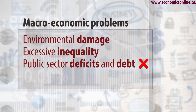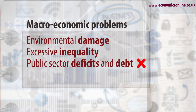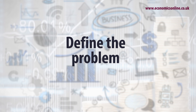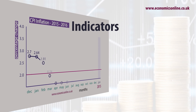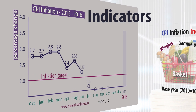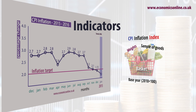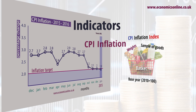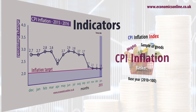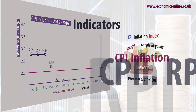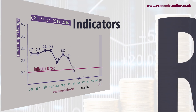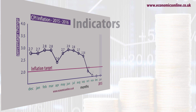When analysing problems, there are several things to do. Firstly, define the problem. Then, explain how the problem is measured — what are the indicators economists look for? For example, with inflation, you will need to explain the CPI and how it is constructed and how it differs from other indicators. Next, explain the possible causes of the problem.